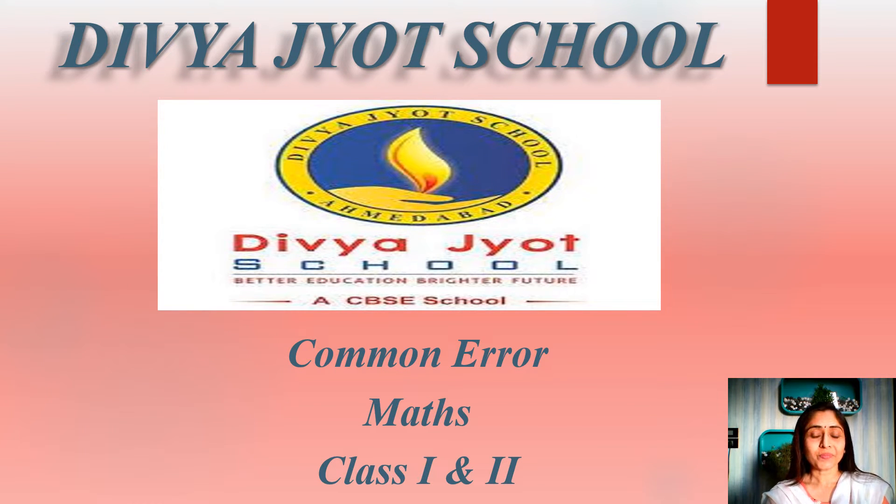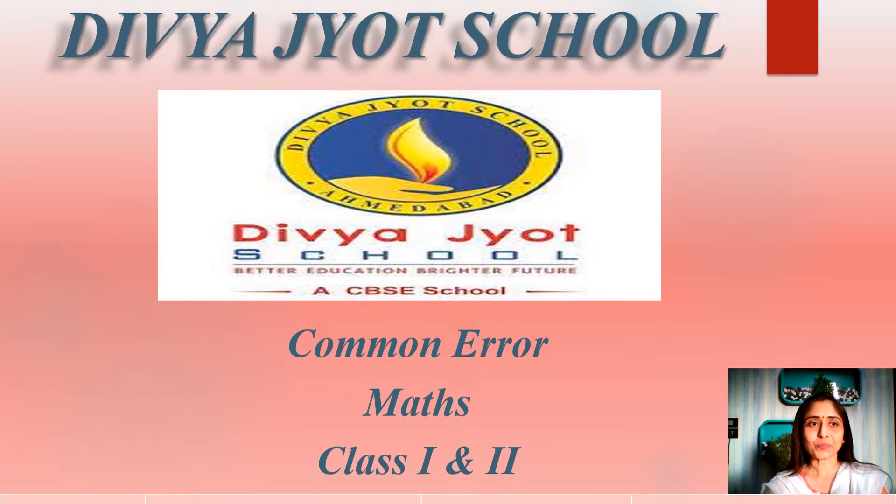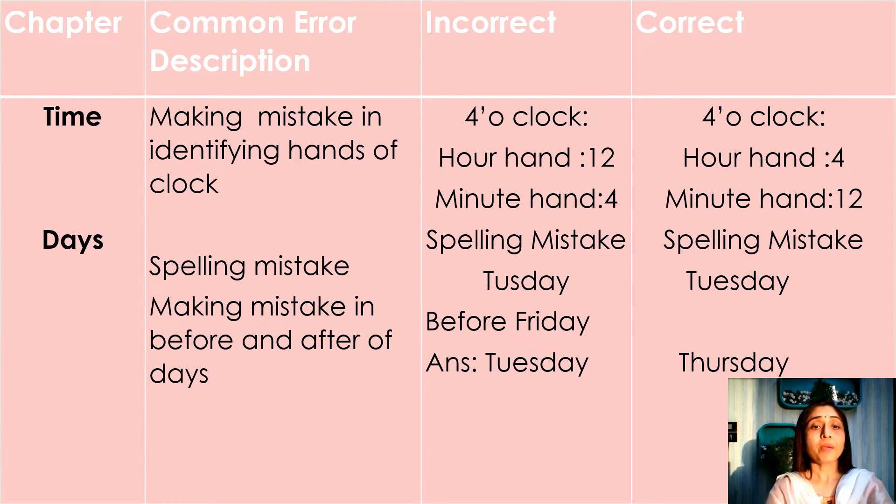Welcome to The Visual School, common errors of math class 1 and 2. Making mistake in identifying hands of clock. It's 4 o'clock, but instead of 4 o'clock they say 12 o'clock. They get confused between hour hand and minute hand.